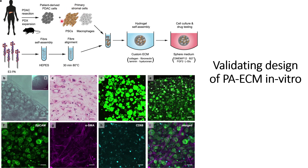The patient-derived PDAC cells were combined with primary stromal cells, which are composed of pancreatic stellate cells and macrophages, and allowed to grow in a tube. This custom ECM, together with the patient-derived PDAC cells and the primary stromal cell mixtures, were kept together, and after some time, hydrogel-cell assembly occurred.